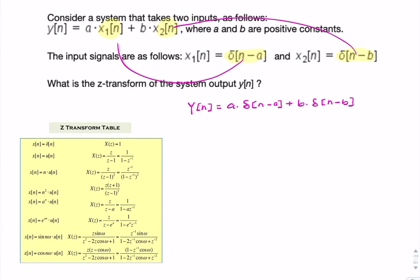To find the z-transform Y(z), we simply need to find the z-transform of an impulse, and we can do that using the table. An impulse function delta of n gives us 1, and because it's a linear operation, we simply multiply this 1 by a. So we have an a and we have a b.